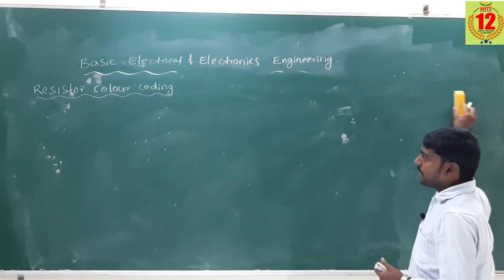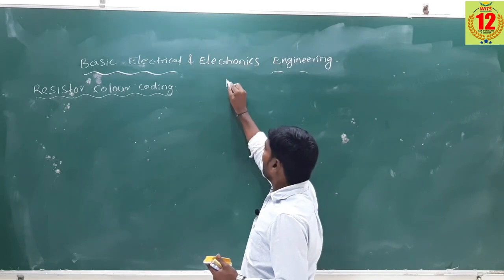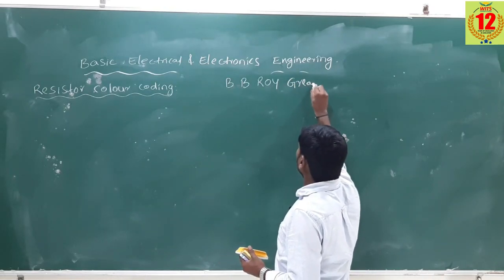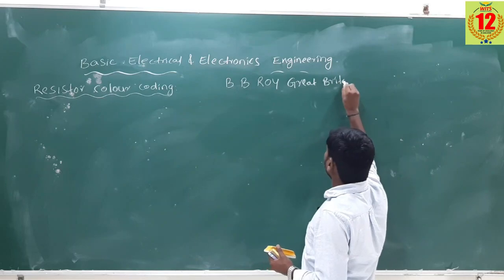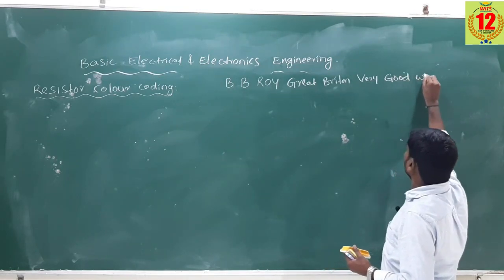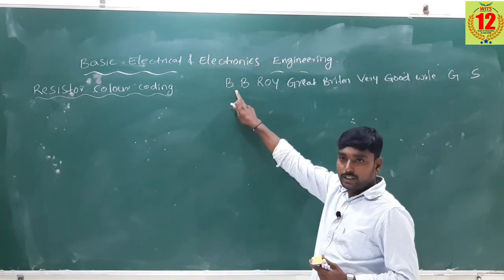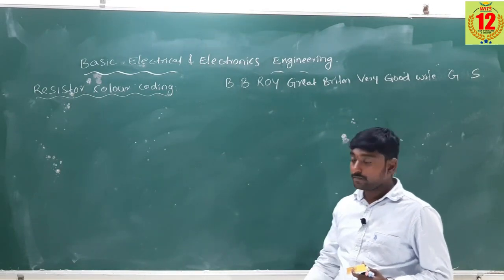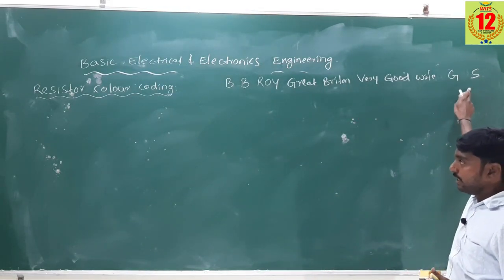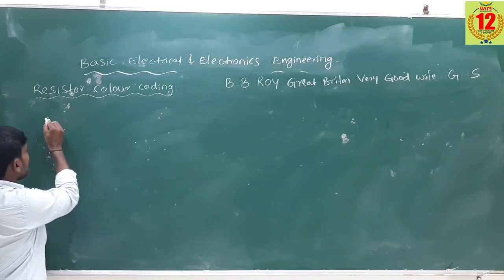We can get the resistance value with the help of color coding. I am giving a small shortcut. Here, remember the sentence: BB Roy, Great Britain, Very Good Wife, G, S. By using this statement, we build one table. This sentence will be used for numbers, multipliers, and coding. The first letters correspond to the colors.